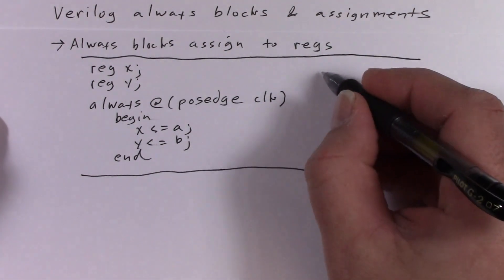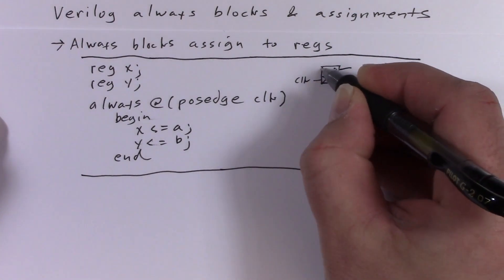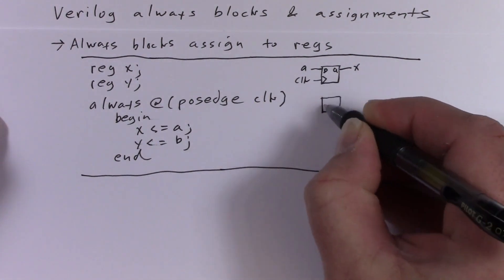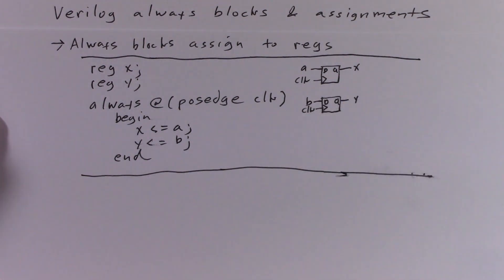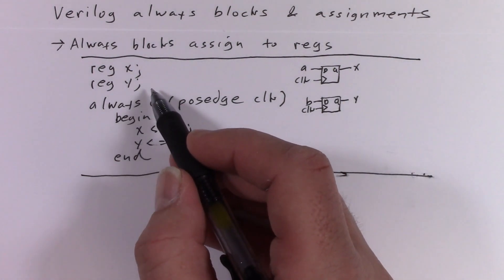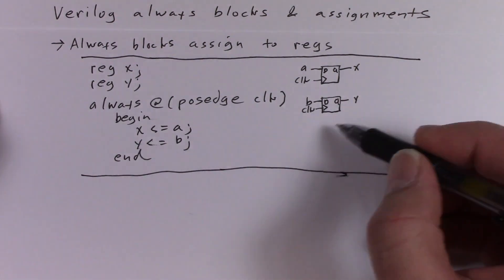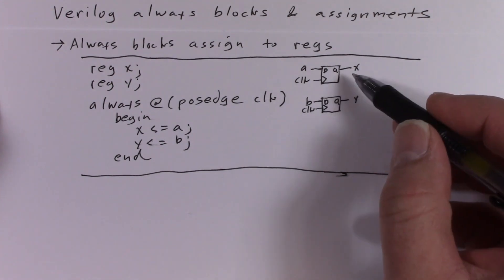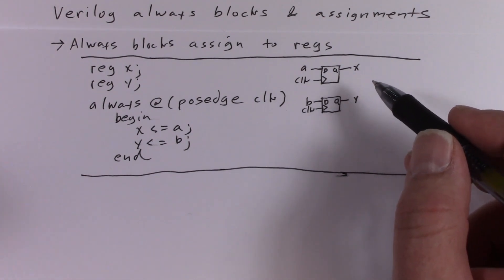The block diagram would look something like this. Now registers are the main storage device for a Verilog simulator, but in this case they got synthesized into flip-flops. But that's not always true — it depends on what the behavior of the register actually is.